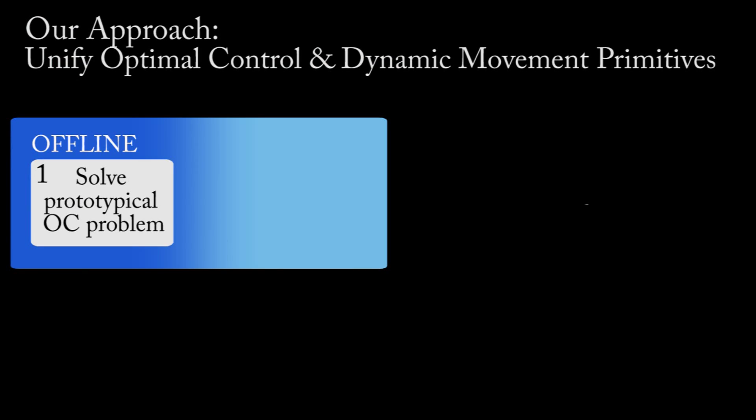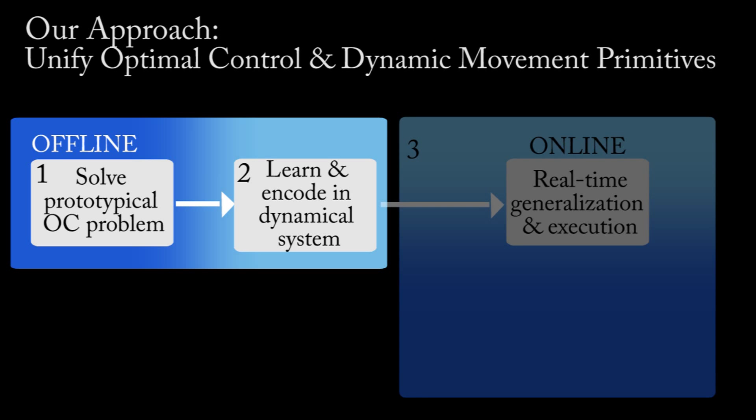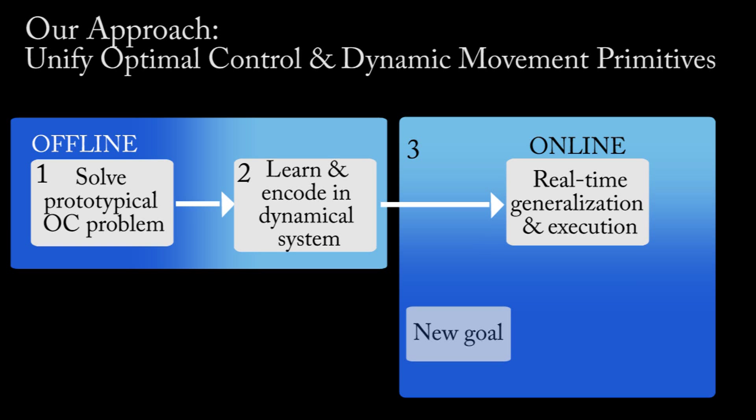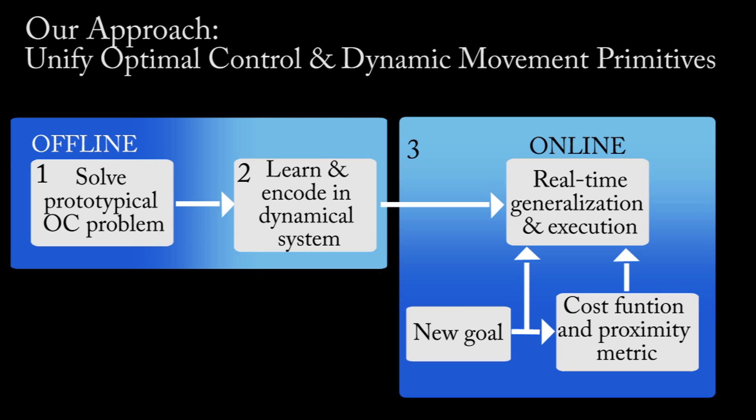In order to generate optimal motions in real time, we solve the respective prototypical optimal control problem multiple times offline. Then, the optimal trajectories are learned by a dynamical system and can then be generalized in real time to a new goal state with a cost metric based distance measure.